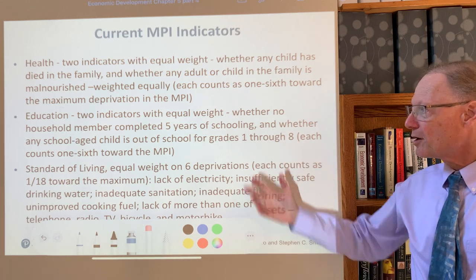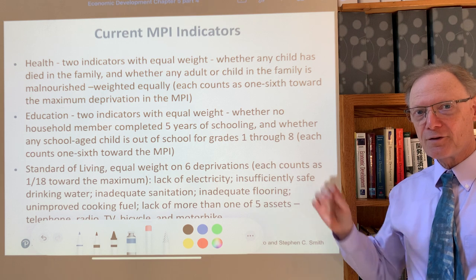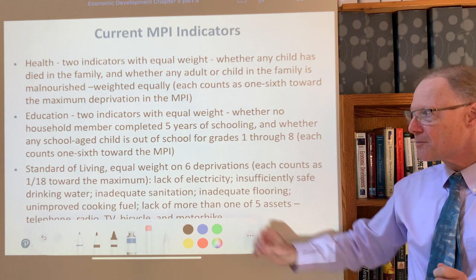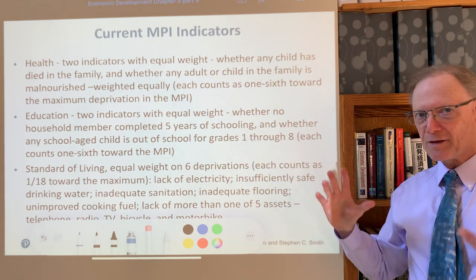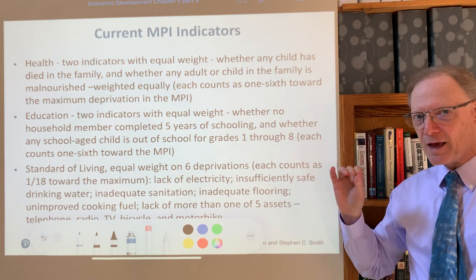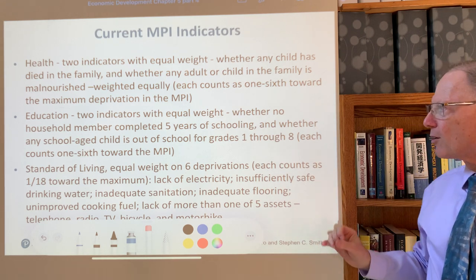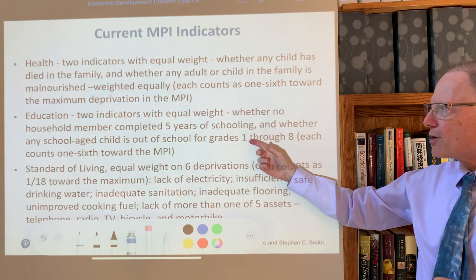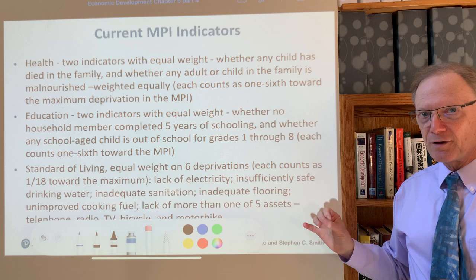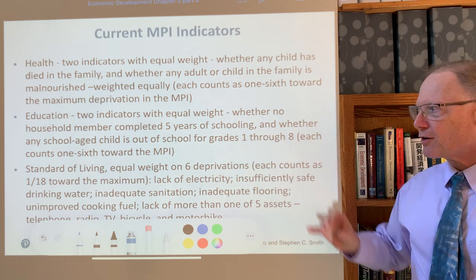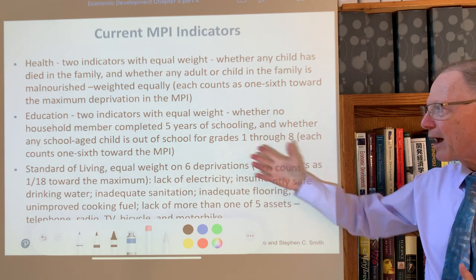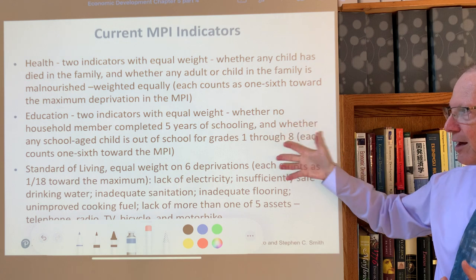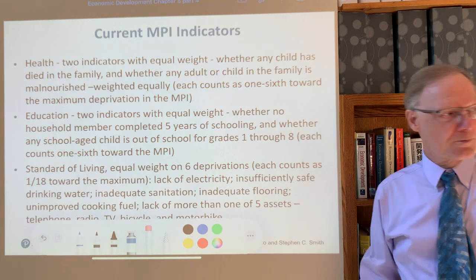Second is education. For education there are also two indicators within that dimension, each with equal weight — one-third overall weight in the index to education, so each of the two indicators has one-sixth of overall weight in the education part of the MPI. These two are: whether no household member has completed five or more years of schooling, and whether there is any school-aged child who is out of school for grades one through eight.